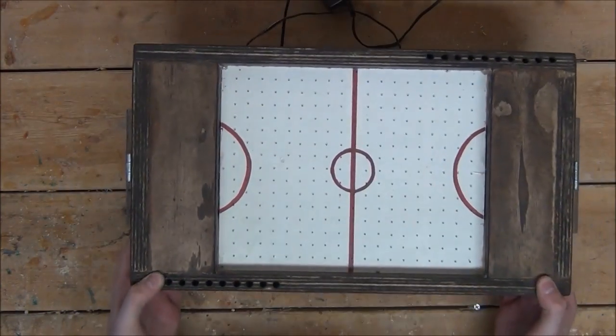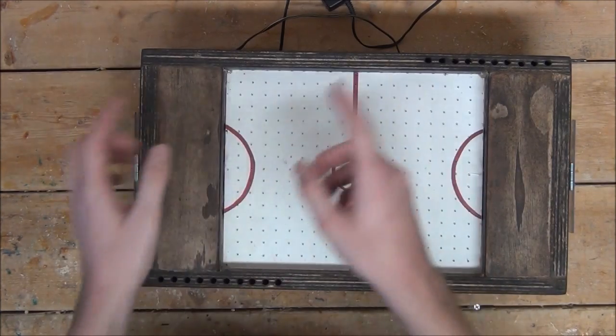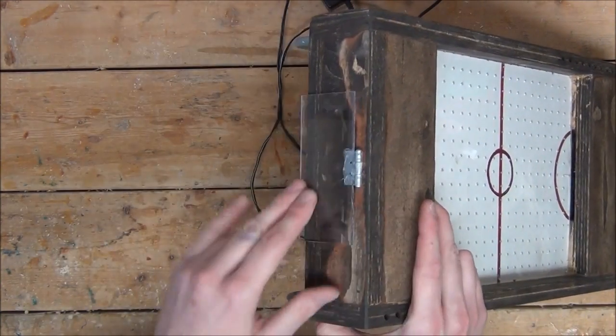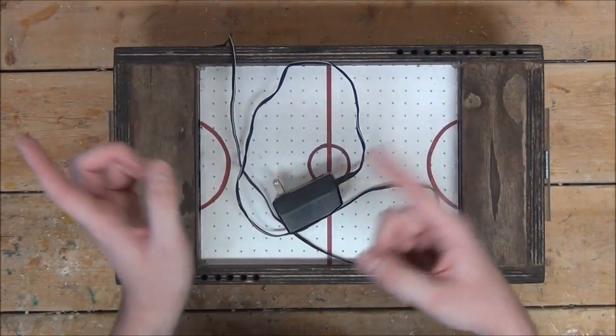Just like that. Now whenever you hit a puck, the lexan will stop it from flying out. But whenever you want to get the puck again, all you have to do is open up the door. With that, the table itself is complete and we can move on to the puck and hitters.